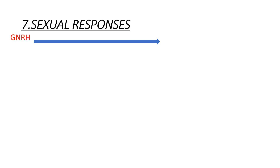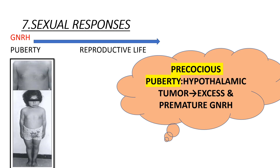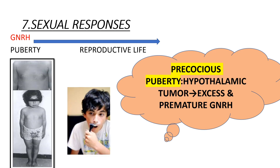Sexual responses are mediated by gonadotrophin releasing hormone (GnRH). Its secretion starts at puberty and continues throughout reproductive life. There is a condition called precocious puberty, where there is excess and premature secretion of GnRH from the hypothalamus, resulting in early breast development and early development of secondary sexual characters.